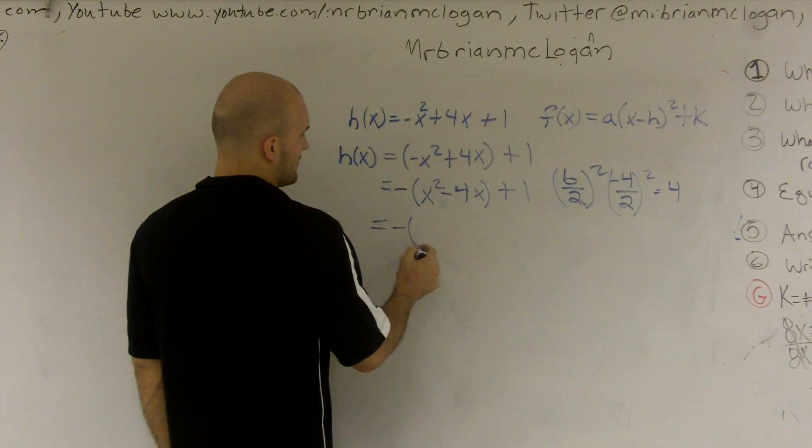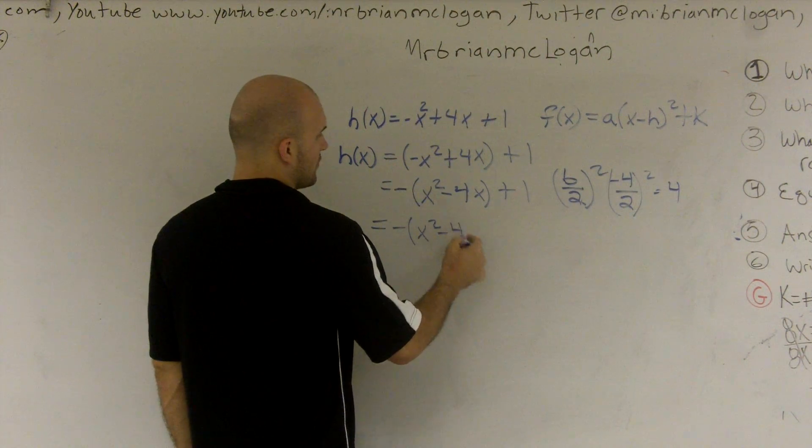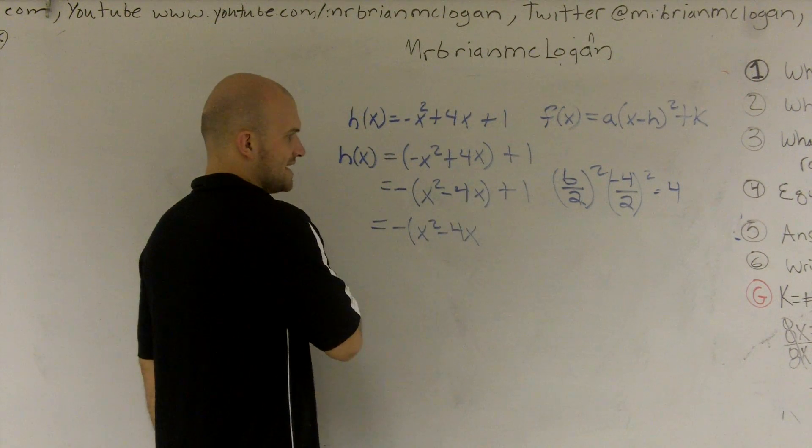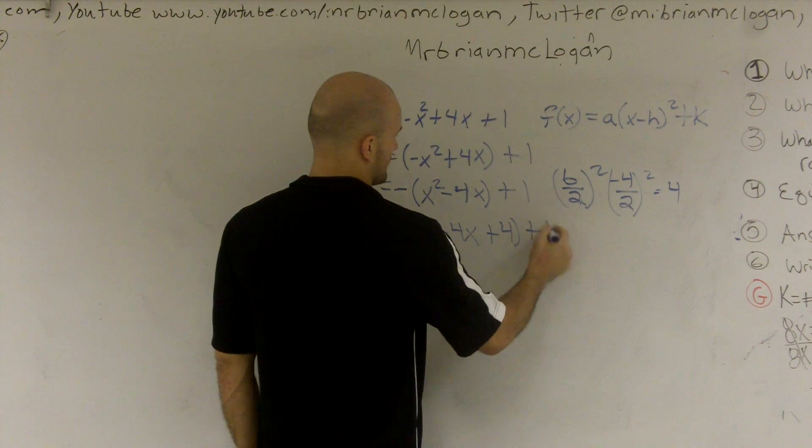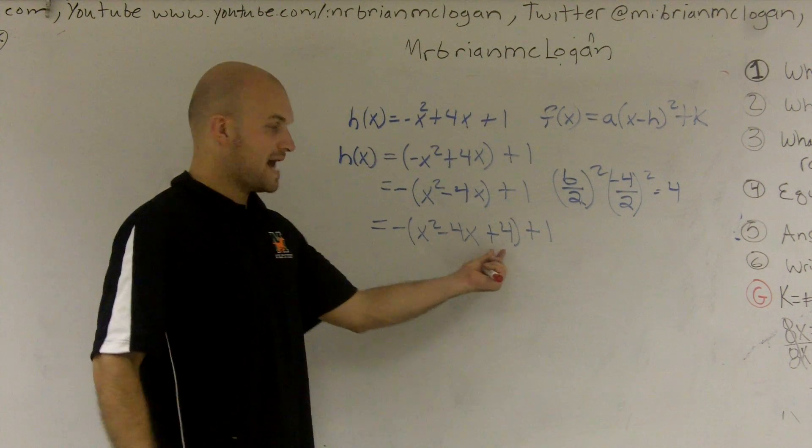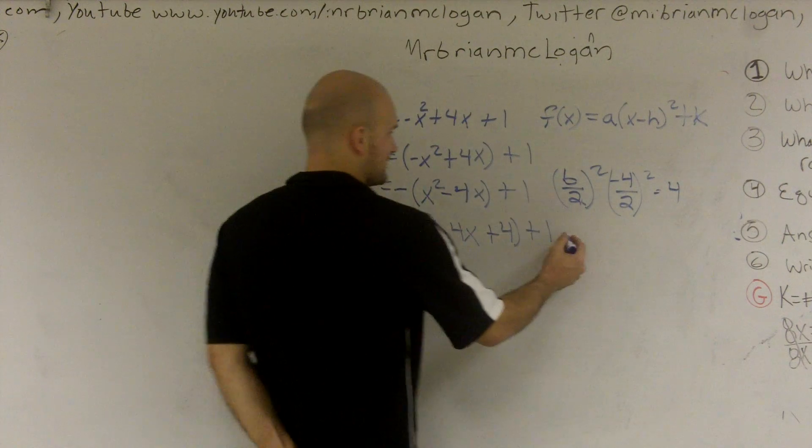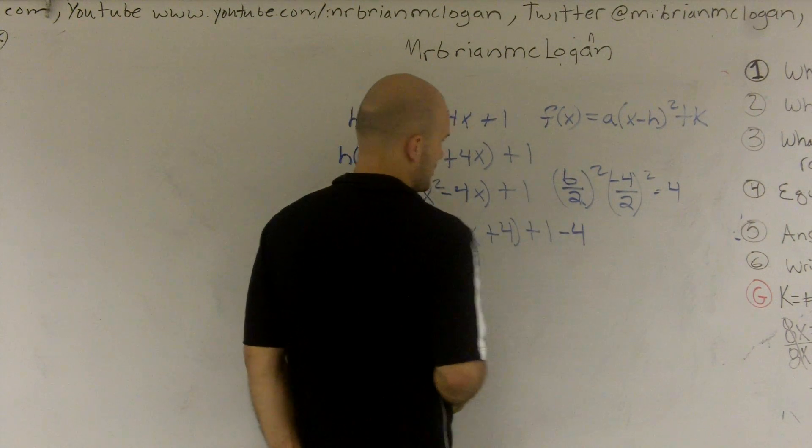So therefore, I write negative x squared minus 4x. And now what I do is I take my b over 2 and I add it into my trinomial. Now, since I'm adding it inside my trinomial, I also have to subtract it out of my trinomial.